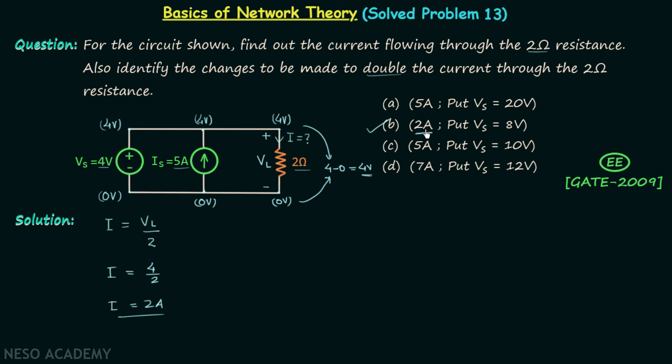But in the question it is also asking about the change we need to make to double the current through the two ohm resistance. So this time we want the current equal to two times I which is equal to two multiplied by two, that is four amperes.